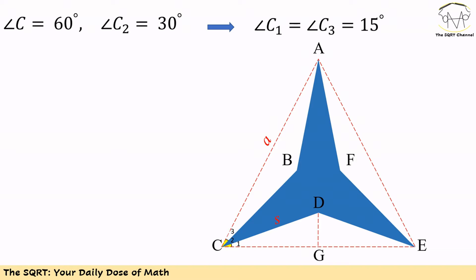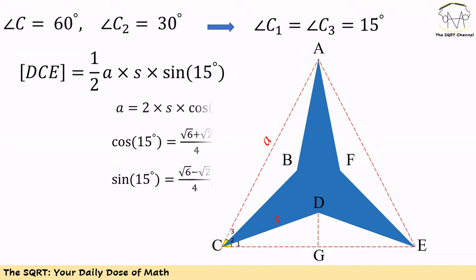Now we can use a similar approach to find the area of DCE. To do so, we know C is 60 degrees, C2 is 30 degrees, C1 and C3 are 15 degrees, and the area of DCE can be written as a times s times s times sine of 15 over 2.